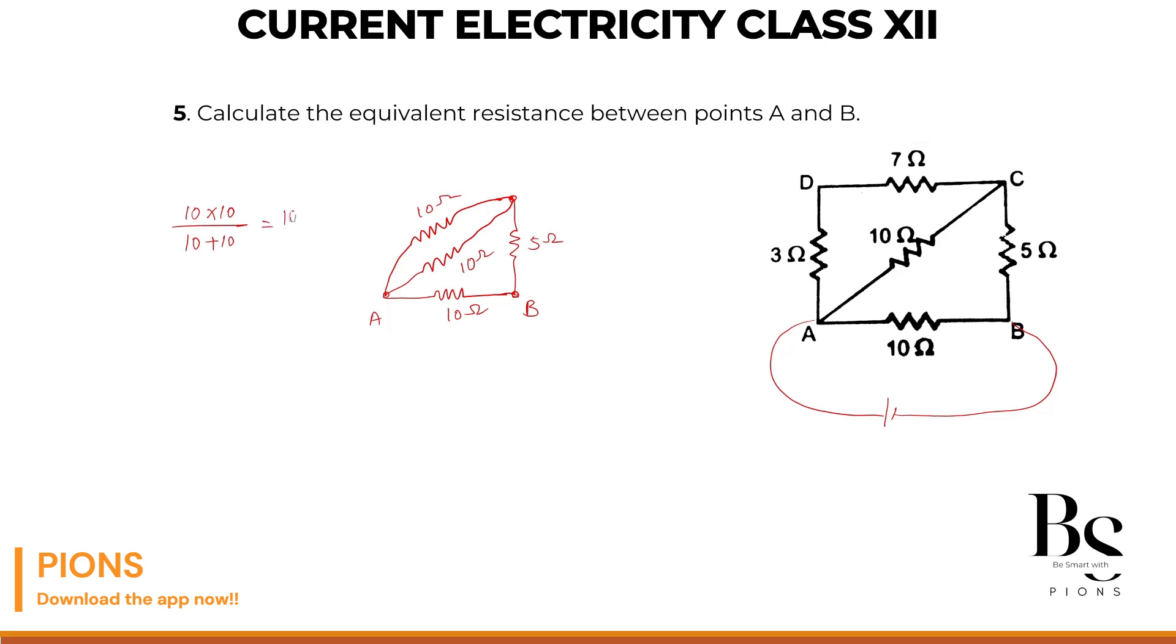That will be nothing but 100 by 20 that equals 5 ohms. This is our R equivalent between A and C for these two 10 ohm, 10 ohm resistances.